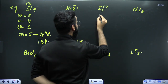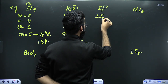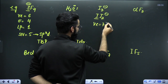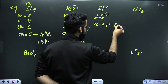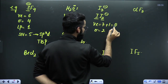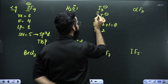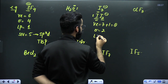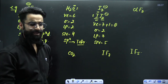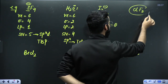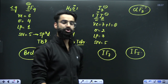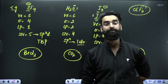Let's take I3 minus. Iodine is the central atom with 7 valence electrons, plus 1 for the negative charge, giving 8. There are 2 terminal atoms, so 2 sigma bonds. Out of 8 valence electrons, 2 are used for sigma bonds, leaving 6 electrons as 3 lone pairs. Steric number is 2 plus 3 equals 5, so hybridization is sp3d and you can determine the geometry as well. I've taken a few more examples here — let me know your answers for the hybridization and geometry of those compounds.